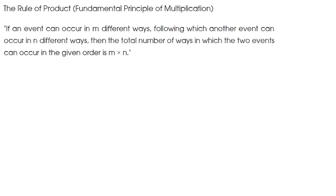Moving on to the Rule of Product or Fundamental Principle of Multiplication. If an event can occur in M different ways, following which another event can occur in N different ways, then the total number of ways in which the two events can occur in the given order is M into N. Similar to the Rule of Addition, this rule can also be extended.